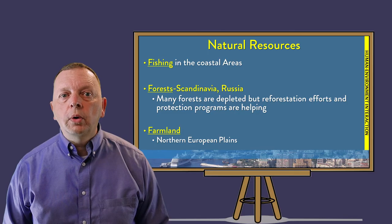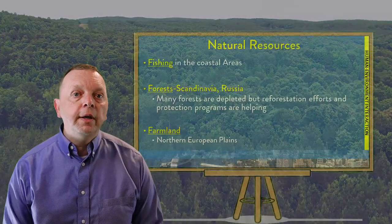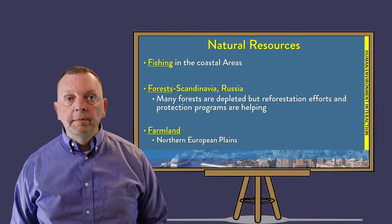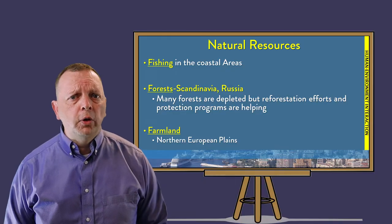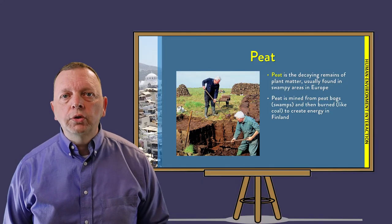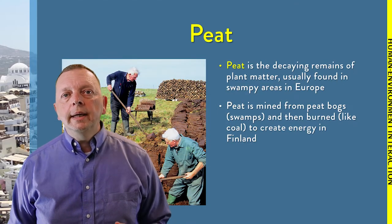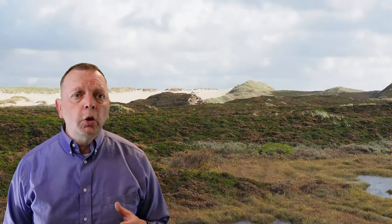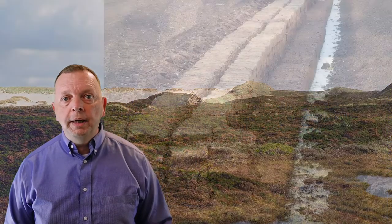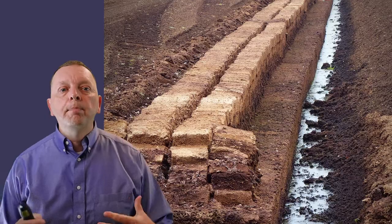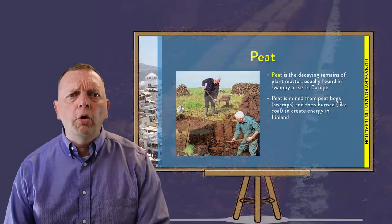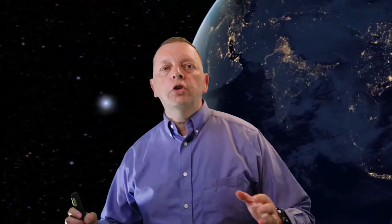Another important natural resource is lumber. Despite the fact that areas such as Hungary, Czech Republic, Slovakia, and Poland have many depleted forests, the forests in Scandinavia and Russia are still very productive. There's also a resource you may not have heard of called peat — an energy source used in places such as Finland, where there are few trees. Peat is the decaying remains of plants and water. Europeans mine peat from peat or swamp bogs and burn it much like coal to create energy.